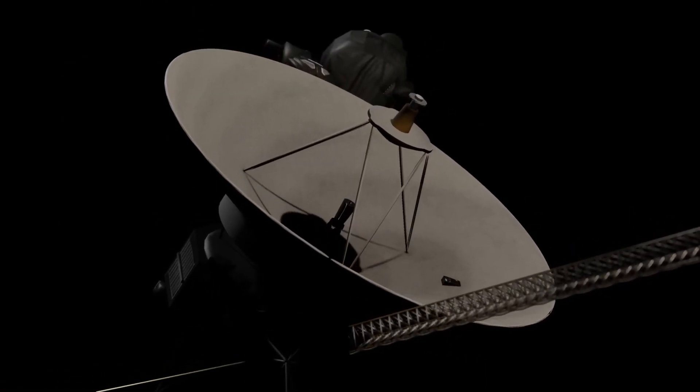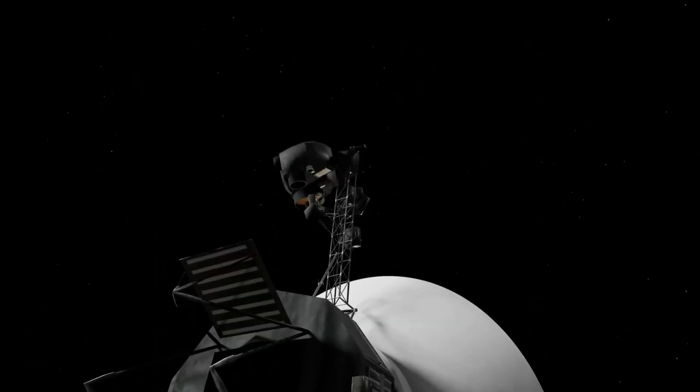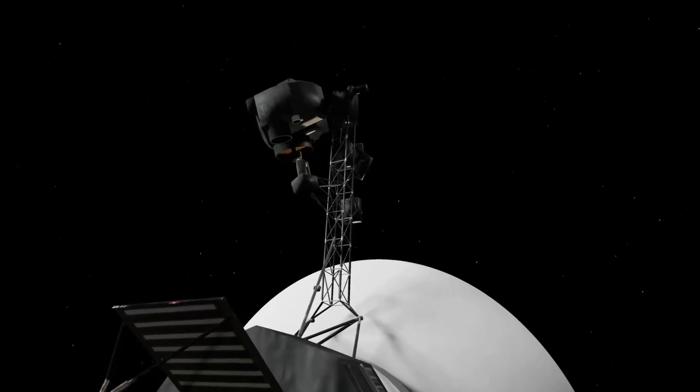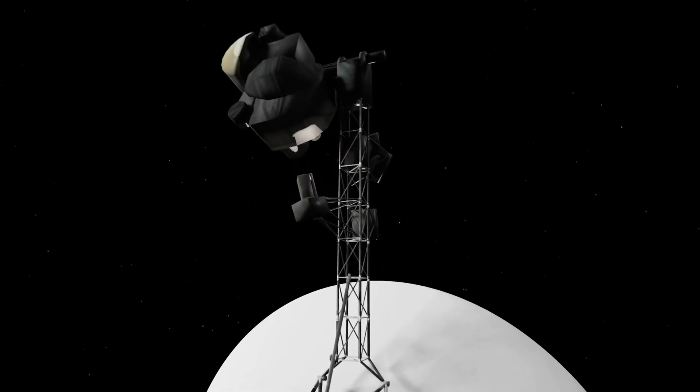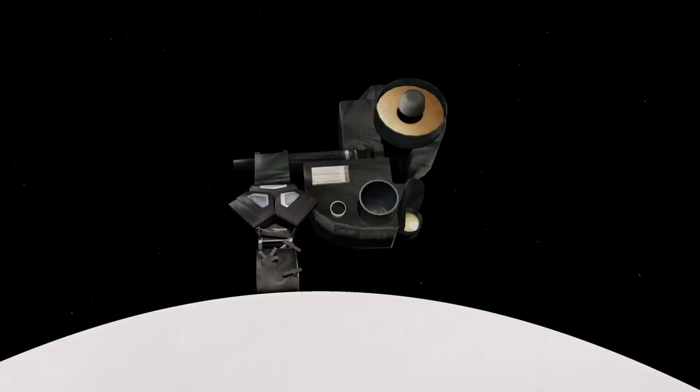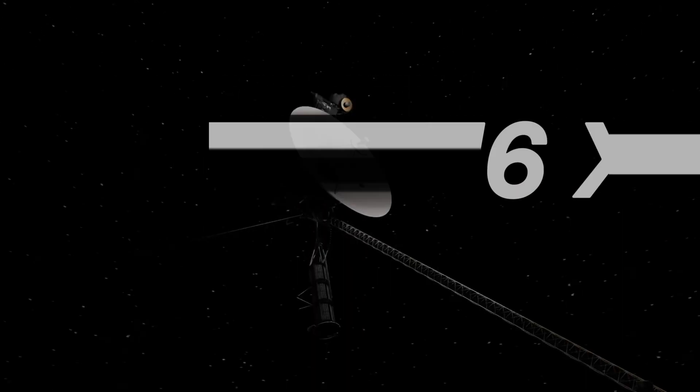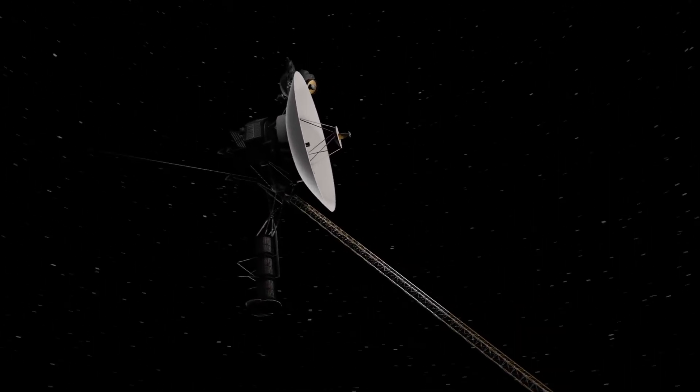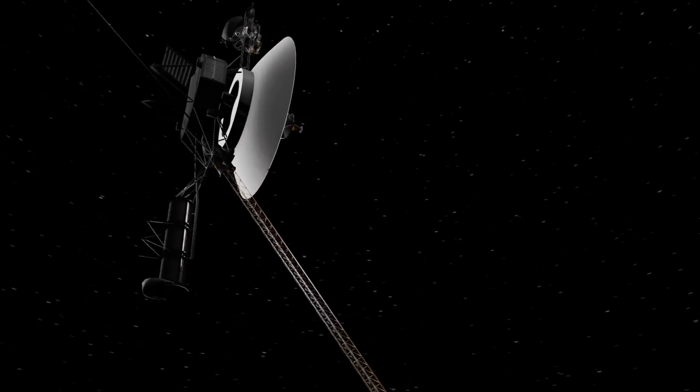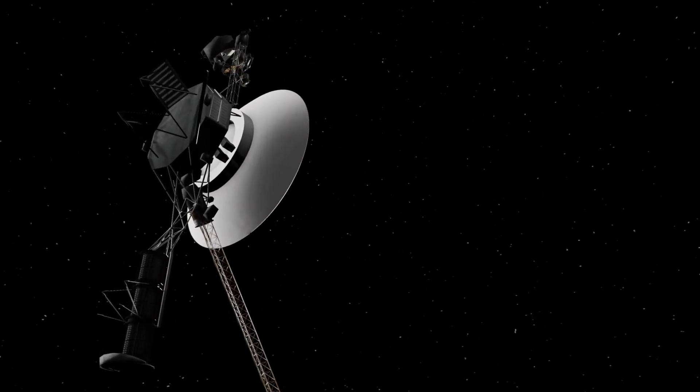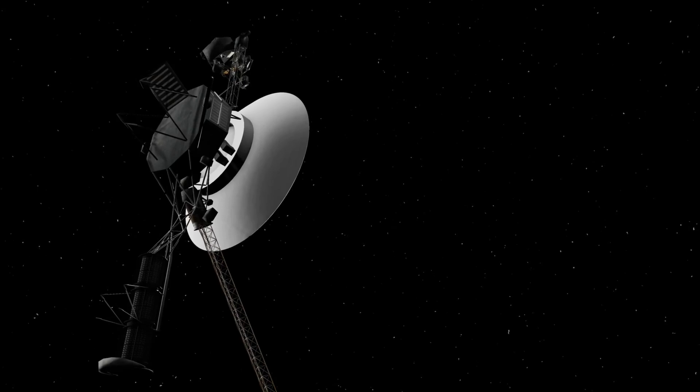But assuming the cameras were still in good condition, what would they see if they were turned back on? Many think that Voyager 1 is so far from the sun that it will be in complete darkness, but this is not true. Despite now being 23 billion kilometers away, the light from the sun is still 16 times brighter than the moonlight here on Earth. However, there just isn't anything interesting or big enough around Voyager to capture on camera.